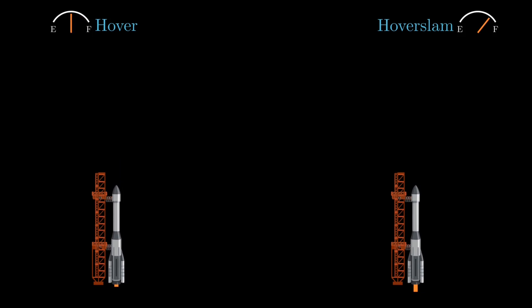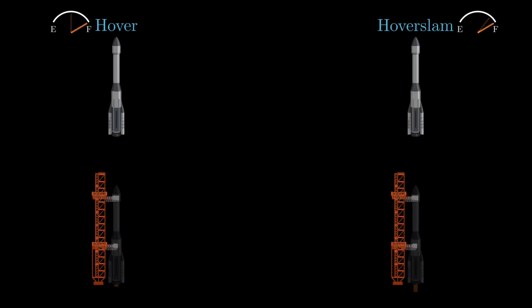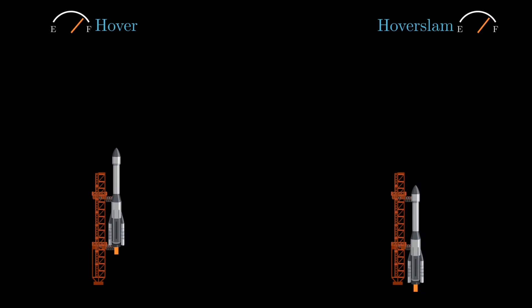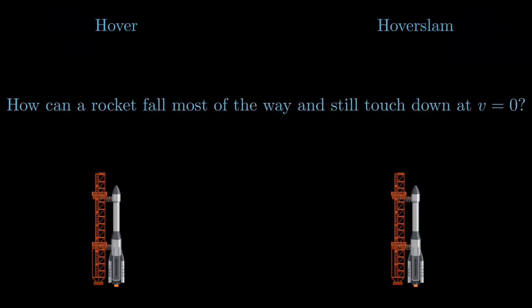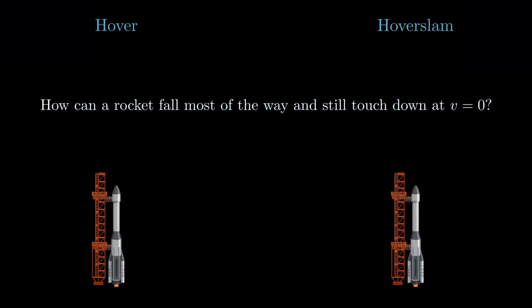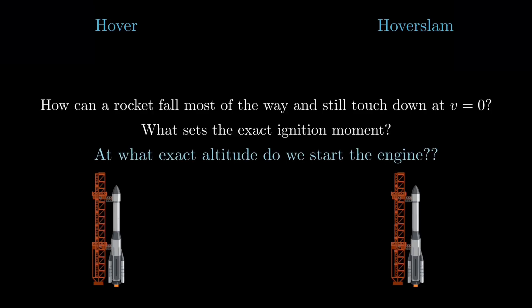This is simple to reason about, but it spends more propellant. In a hoverslam, the stage coasts longer under gravity, the engine relights once later and much lower down, and the single burn is shaped so that the speed falls to zero exactly at touchdown. The trade is clear. Start too high and you waste fuel holding yourself up, start too low, and the available upward acceleration is not enough to stop in time. The question that arises then, how can the stage fall most of the way and still touch down at V equals zero, and at what altitude should the engine start? These are the exact questions that we are going to try and answer now.